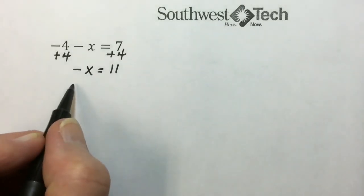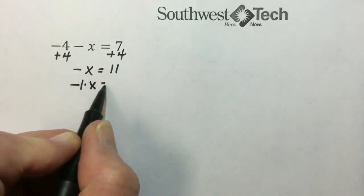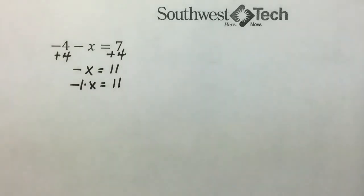This negative x is shorthand for negative 1 times x. And we always want to solve for a positive 1 coefficient on our variable. So this does involve a second step, that which we will use our multiplication principle to solve.